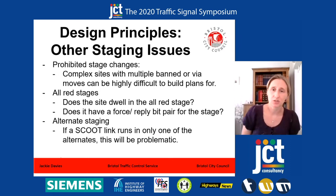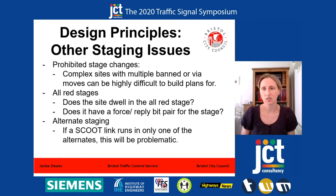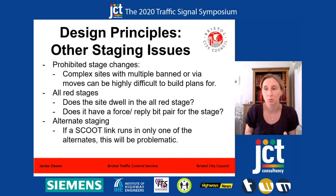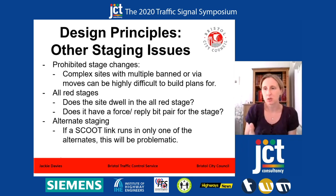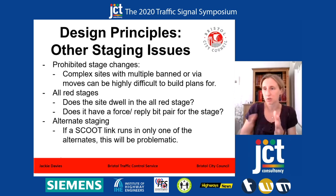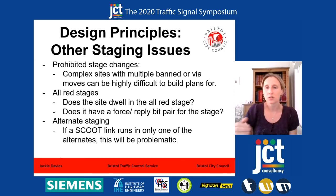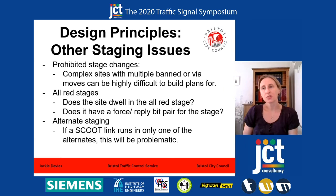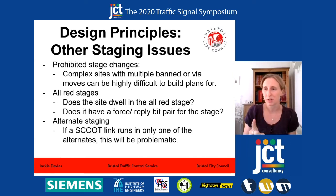There are lots of other staging issues you might come up against. Prohibited stage changes can get interesting — where you have complicated sites with five or six stages with multiple band moves or via moves, it can get so complicated to build plans that in some cases I've found sites where it isn't possible to build a plan that works. All red stages can be a problem: if you have an all red stage to facilitate a via move, that's fine — you can account for that in the intergreen. But where a site dwells in an all red stage, your model is going to see it as stuck in interstage and keep dropping the site as a fault, so you must have a force and reply bit pairing there. Alternate staging is good because it means fewer stages, but if you've got a SCOOT link that runs in only one of two alternates, the SCOOT model doesn't know what's going on.